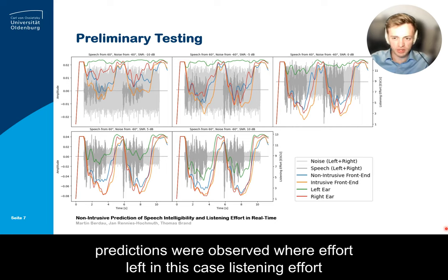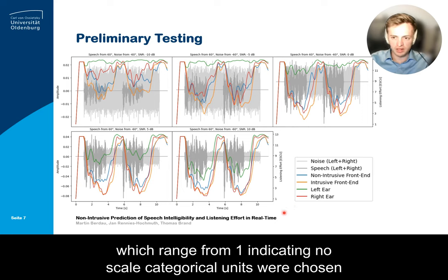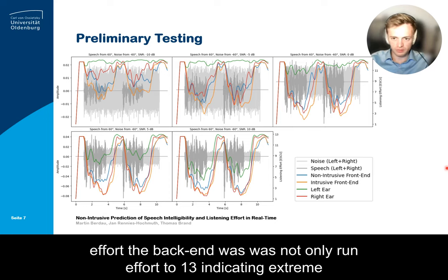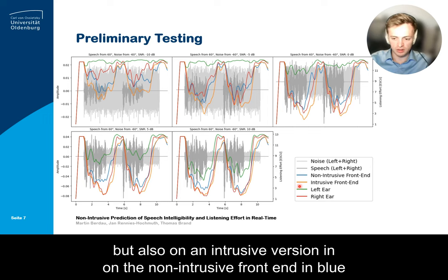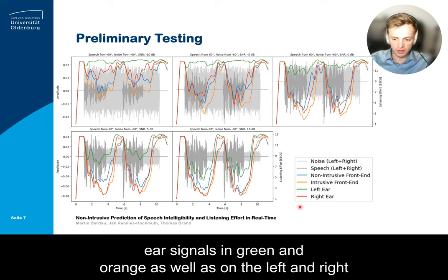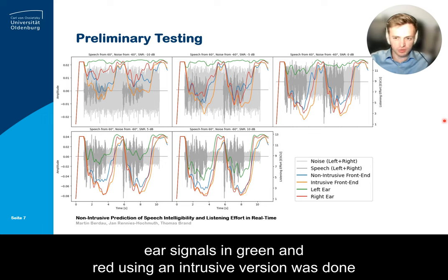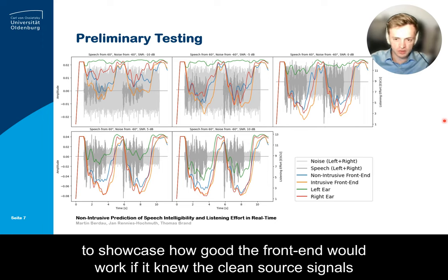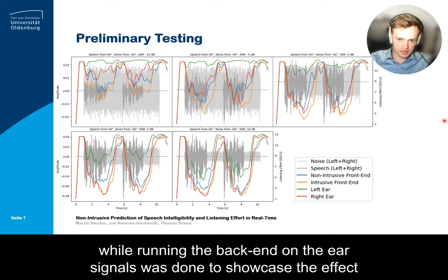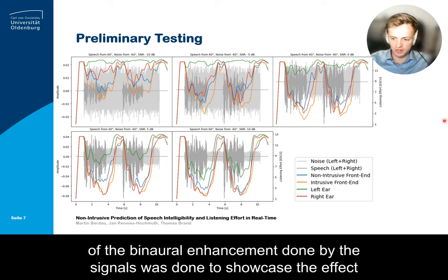Listening effort predictions were observed, where effort scale categorical units were chosen ranging from 1 — indicating no effort — to 13 — indicating extreme effort. The back end was run not only on the non-intrusive front end output in blue, but also on an intrusive version in orange, as well as on the left and right ear signals in green and red. Using an intrusive version was done to showcase how well the front end would work if it knew the clean source signals, while running the back end on the ear signals was done to showcase the effect of the binaural enhancement performed by the front end.